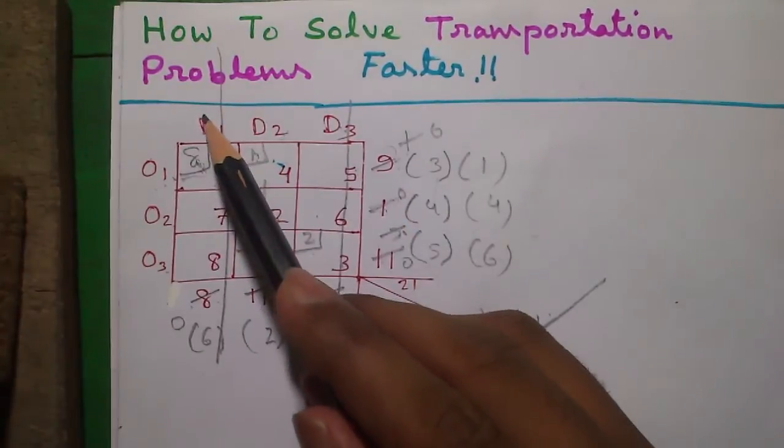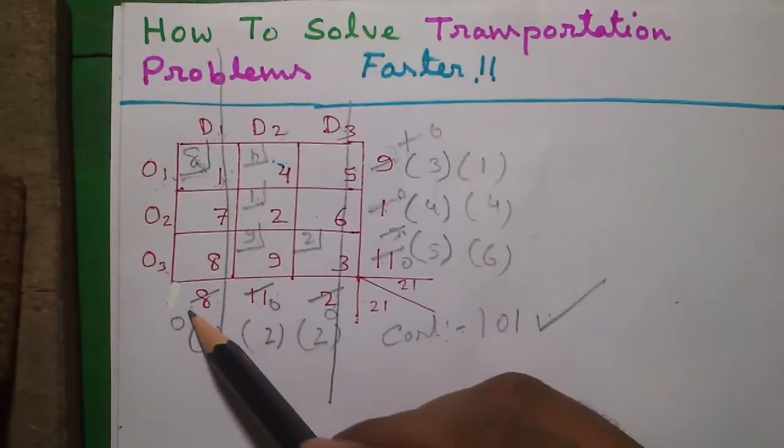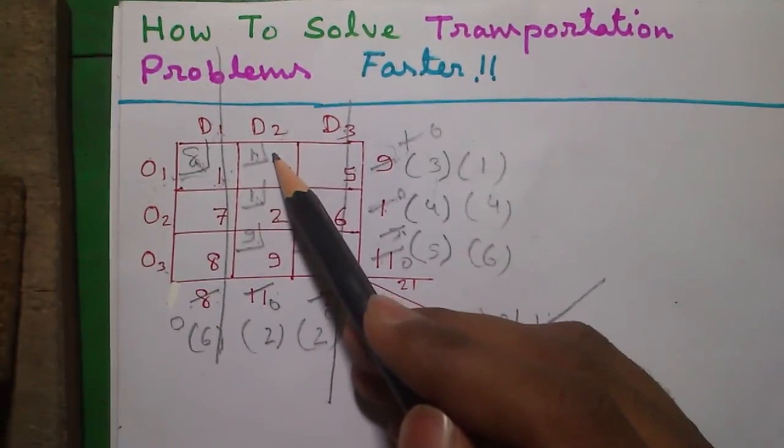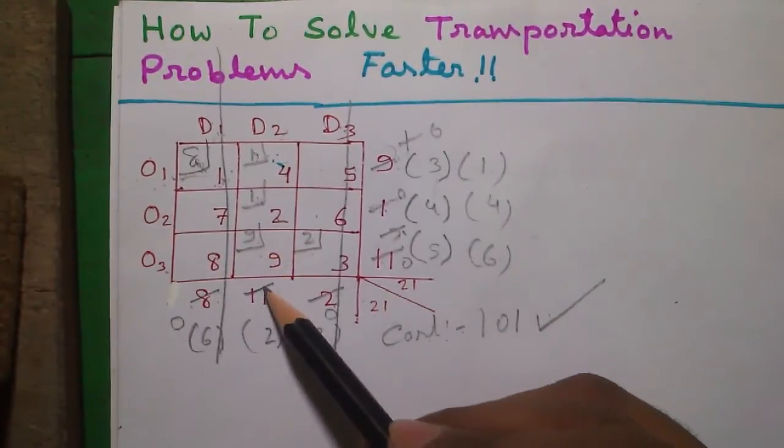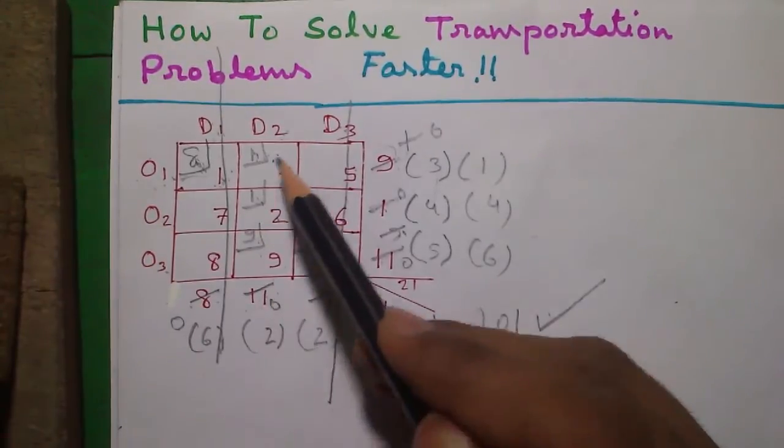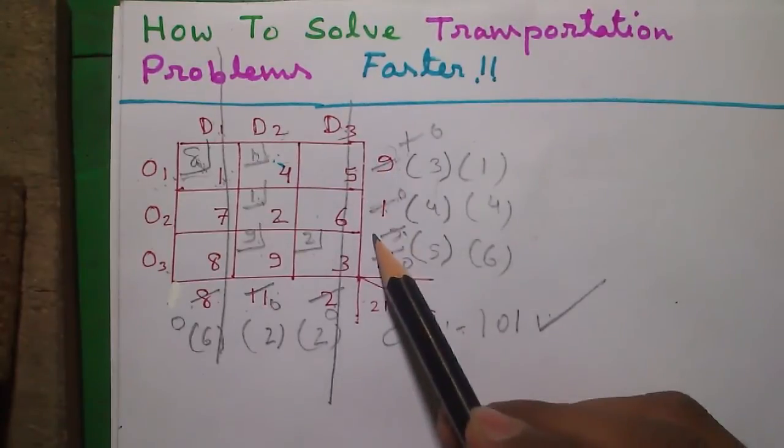Next for column 1 total allocation value is 8 which is equal to our total demand. Similarly for column 2 total allocation value is 1 plus 1 plus 9 which is 11 which is equal to total demand for column 2. So by this way we can check whether our allocation value is correct or not.